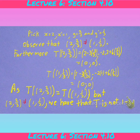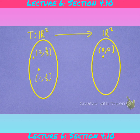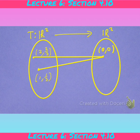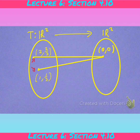T at the point (2, 2/3) equals T at the point (1, 1/3), but (2, 2/3) is not equal to (1, 1/3), so T is definitely not one-to-one. Looking at a diagram, both points are distinct but map to the same point. The definition of one-to-one requires that for every point in the domain there is one unique point in the codomain to which it maps, and here two different points map to the same point.